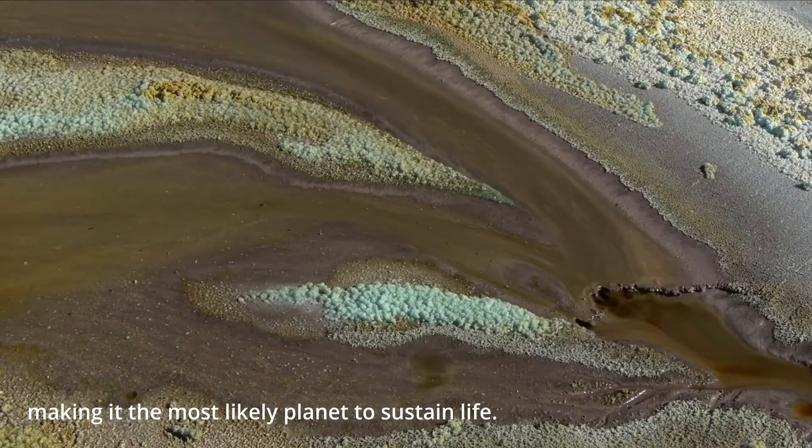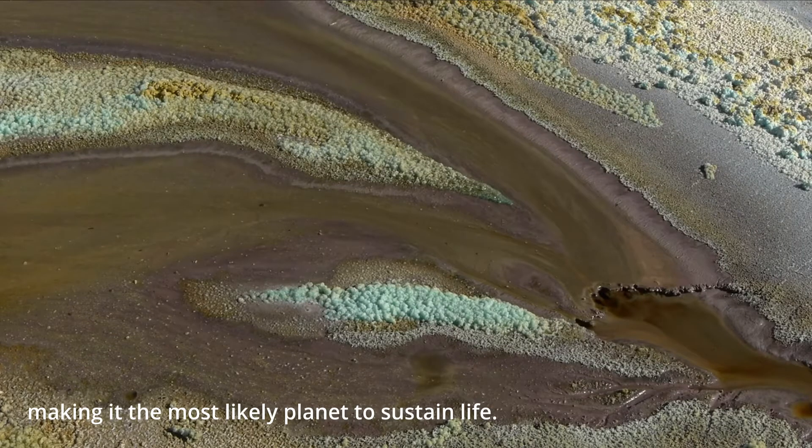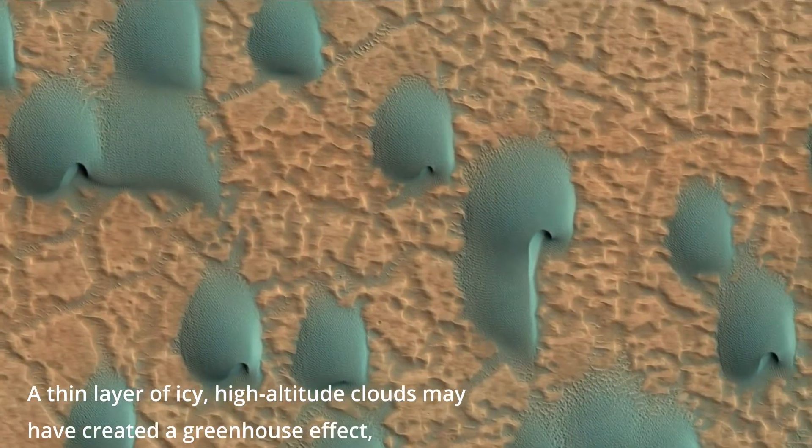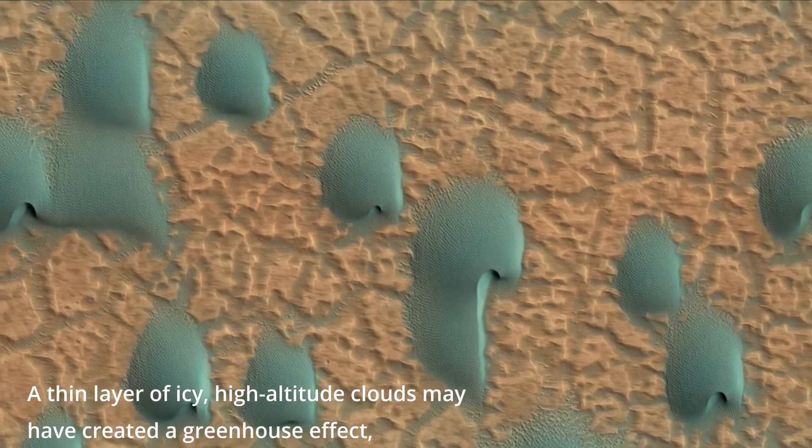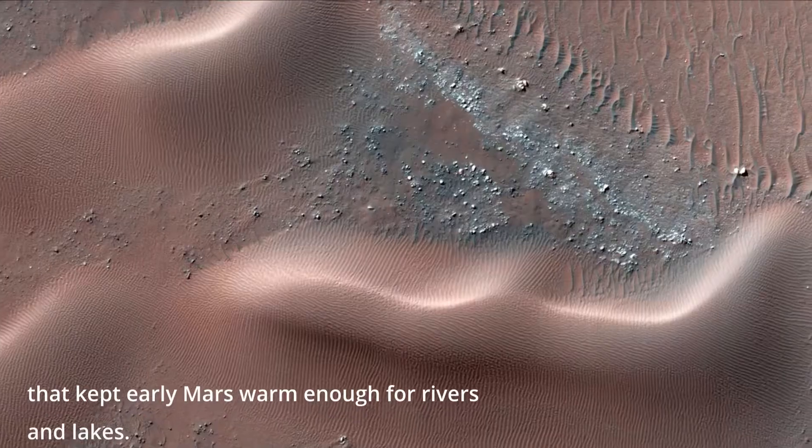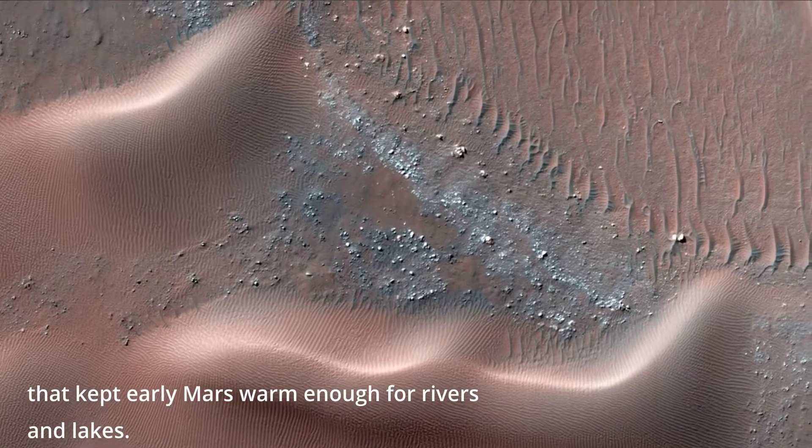Making it the most likely planet to sustain life, a thin layer of icy, high-altitude clouds may have created a greenhouse effect that kept early Mars warm enough for rivers and lakes.